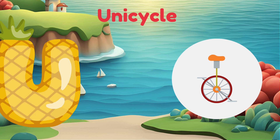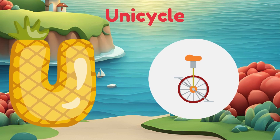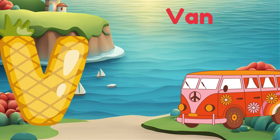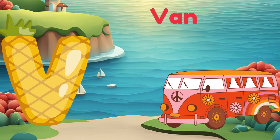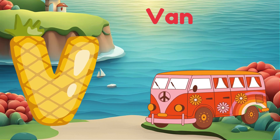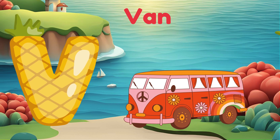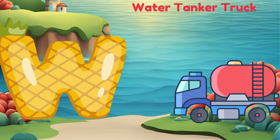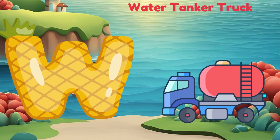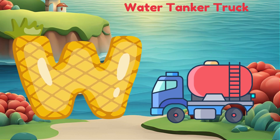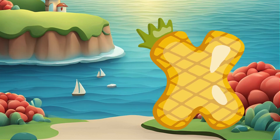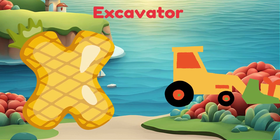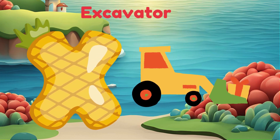U is for Unicycle. U. Unicycle. V is for Van. V. Van. W is for Water Tanker Truck. W. Water Tanker Truck.